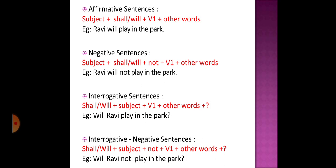Now moving on to the interrogative negative sentence. Remember: if it is interrogative, you must put a question mark — whether it is positive or negative. In the interrogative negative sentence, we use 'shall' or 'will' before the subject and 'not' after the subject. For example: 'Will Ravi not play in the park?' Another example with 'shall': 'Shall I not attend the meeting on Monday?' This is the interrogative negative structure.